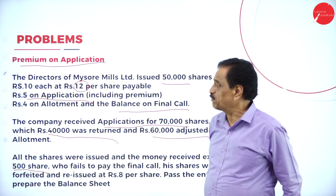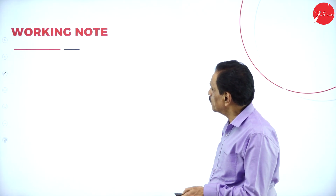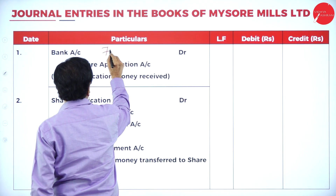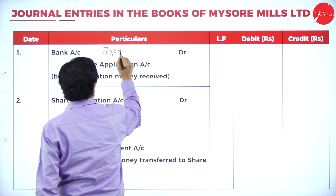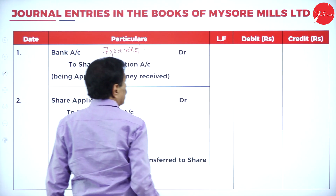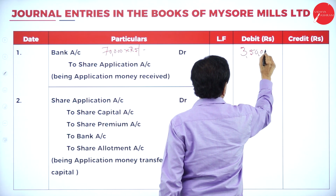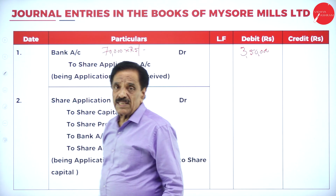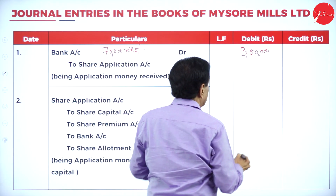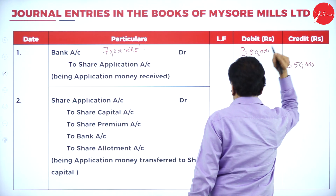Now we will pass the journal entries. First entry: Bank Account Dr ₹3,50,000 — To Share Application Account ₹3,50,000. This represents the application money received: 70,000 applications × ₹5 = ₹3,50,000.